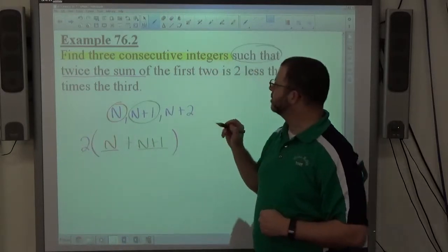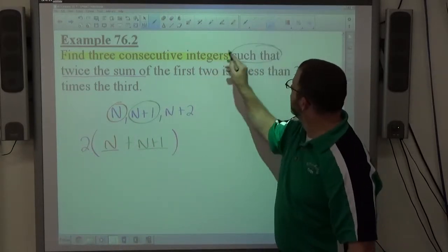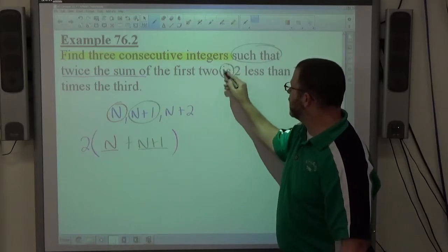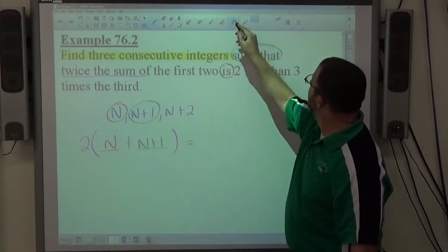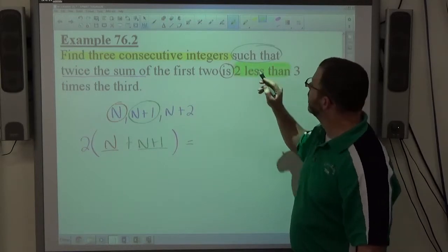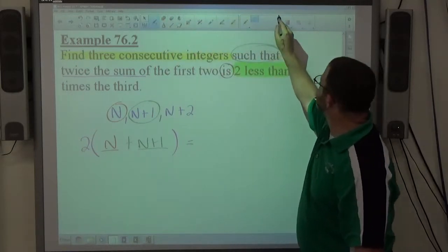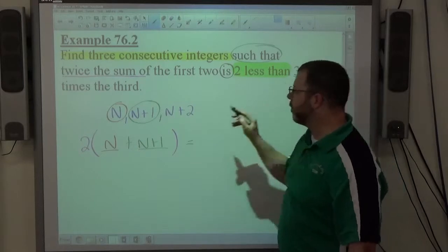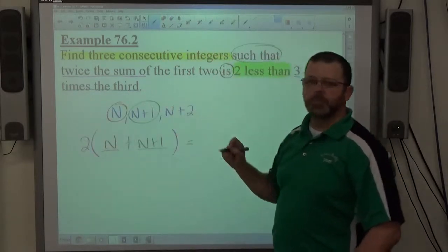Okay, once again, the word is is equals. Anytime we do a less than or greater than, we ignore that until the very end. Then it says three times the third. Now, again, I want to caution you about the use of parentheses.